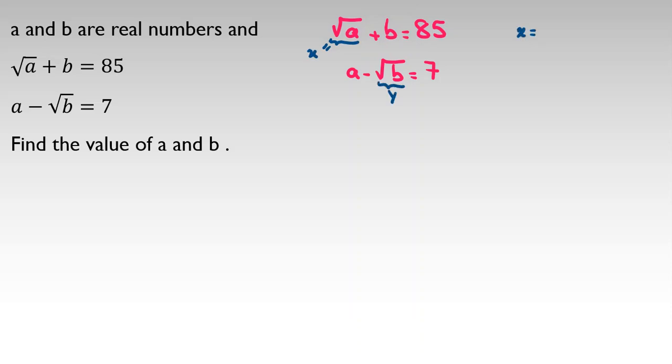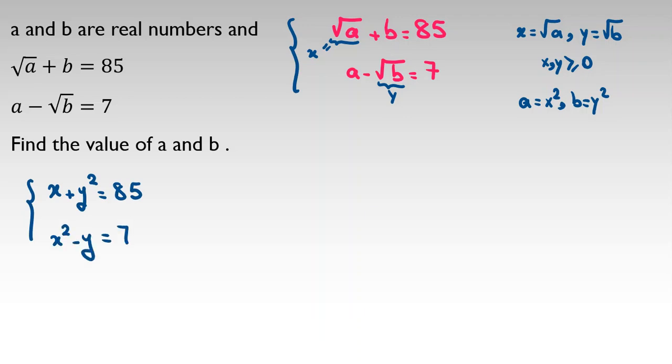I consider x equal to root a and y equal to root b. We should say x and y are greater than or equal to 0. So a is x squared and b will be y squared. Now if we rewrite these two equations, then we have x plus y squared equals 85, and the next one, x squared minus y equals 7.